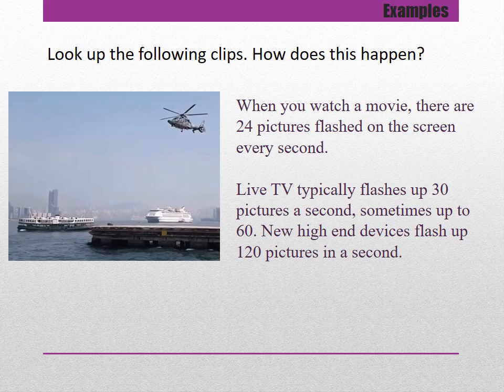When you watch a movie there are 24 pictures flashed on the screen every second. Live TV typically flashes 30 pictures a second, sometimes up to 60, and new high-end devices up to 120. At a movie theater, when the camera moves quickly you may notice the screen seems to jump. In the case of the helicopter, if shooting on film at 24 pictures per second and the propeller is spinning 24 times per second, the camera takes a picture of the blade in the exact same spot each time — and that is why the blades appear not to be moving.